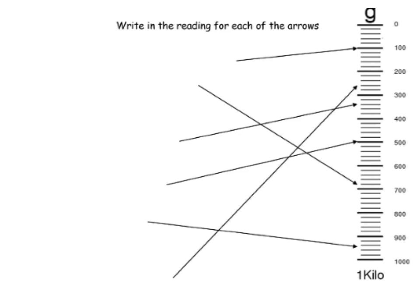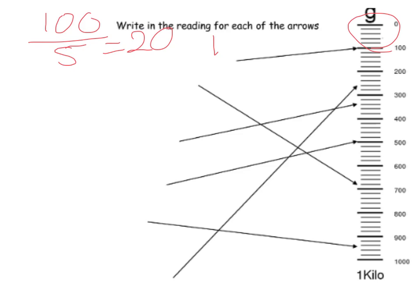Okay, so to work this one out, the first thing we need to do is take one of the large areas, which we know is worth 100, and there are 5 jumps. 100 divided by 5 is 20, so each line is going up in 20. The first one is nice and easy — it's just pointing at 100, so I know that's 100 grams.